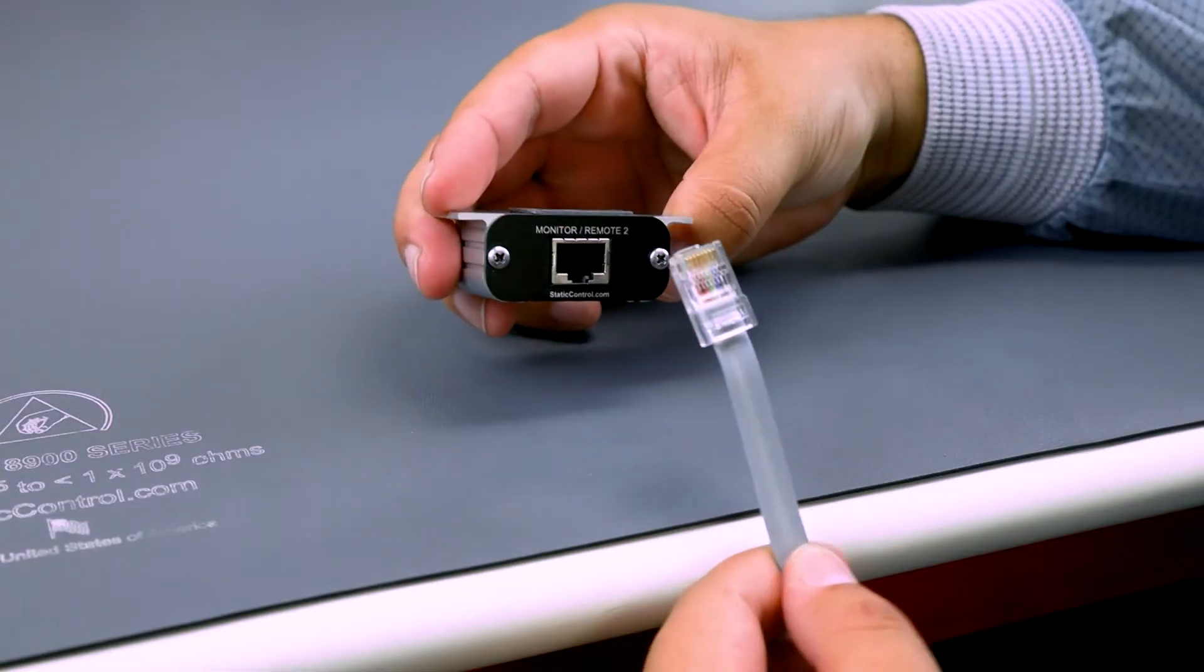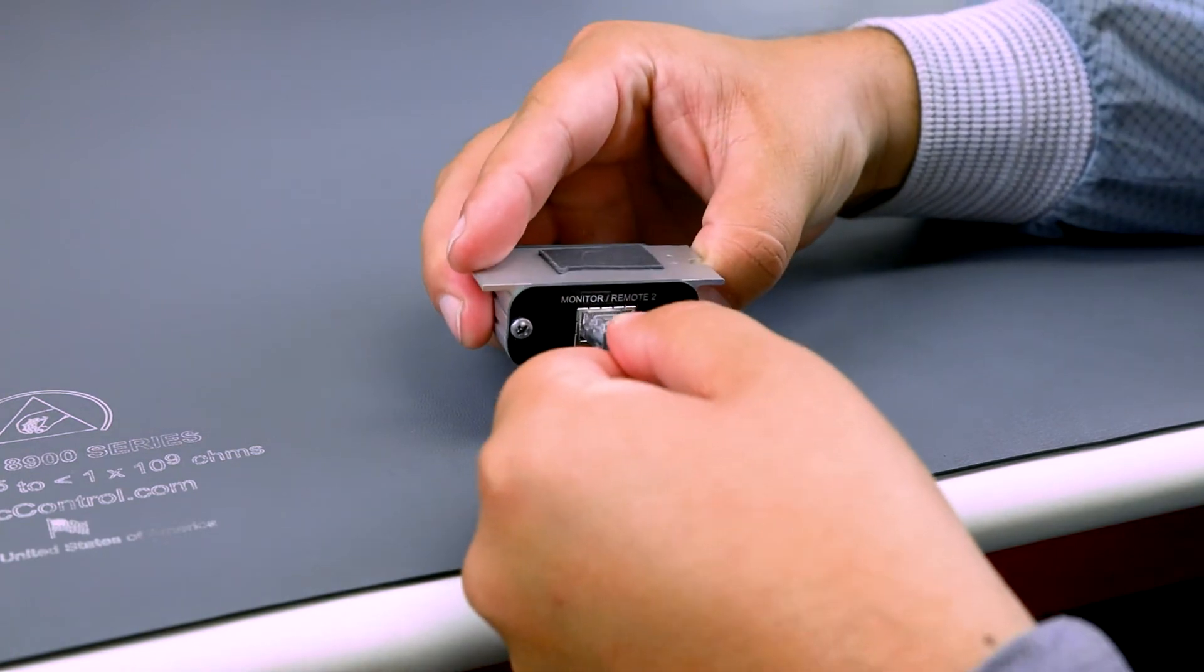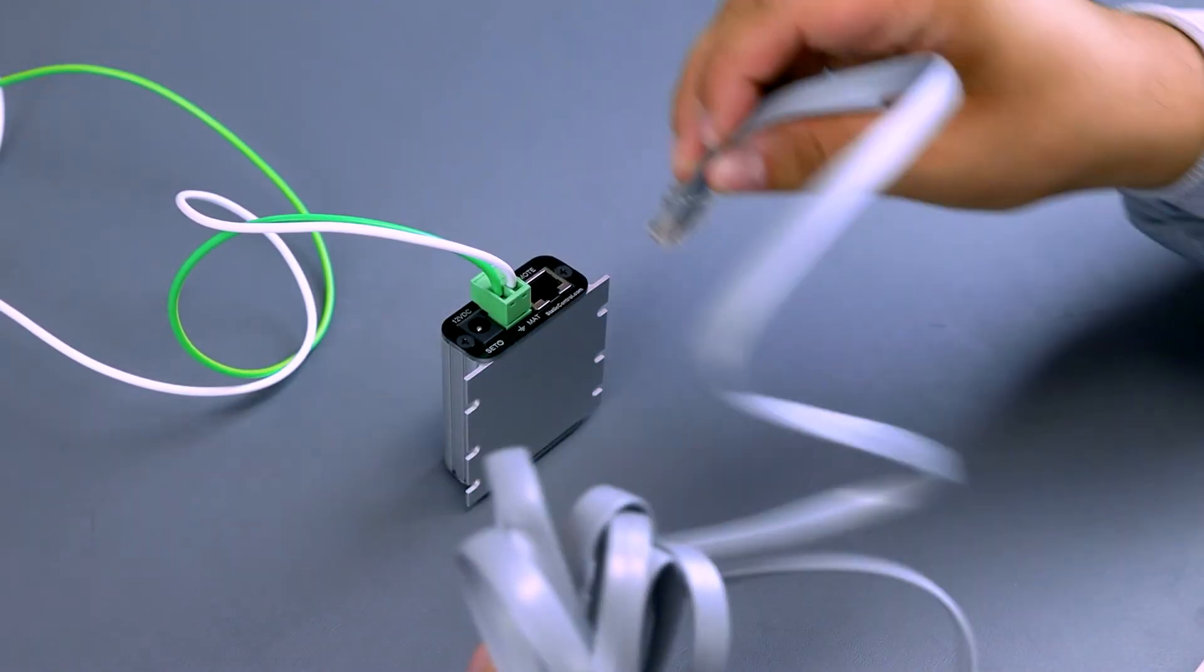Next, connect the operator remote cable to the back of the remote and route the cable back to the monitor and connect the cord on the back.